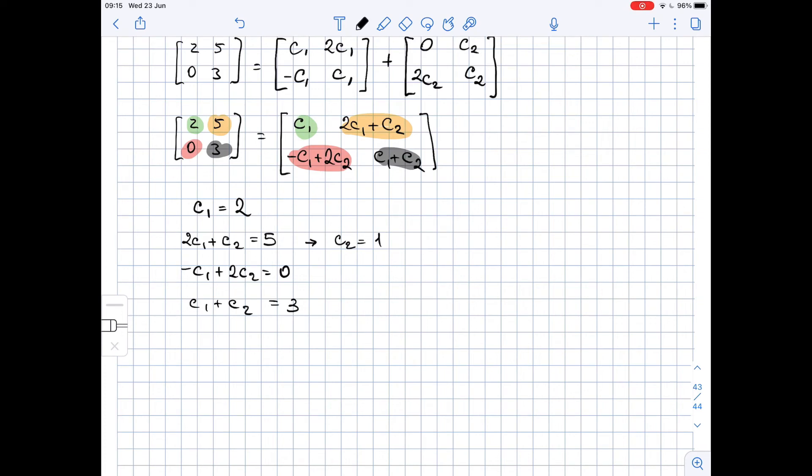Now let's substitute 1 and 2 for C1 and C2 in the rest of equations just to check. So here we get negative 2 plus 2 times 1, and it equals 0, yes, this is correct. And then here we have C1 plus C2, which is 2 plus 1 equals 3, which is true.